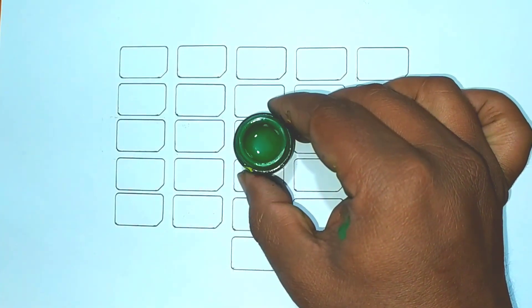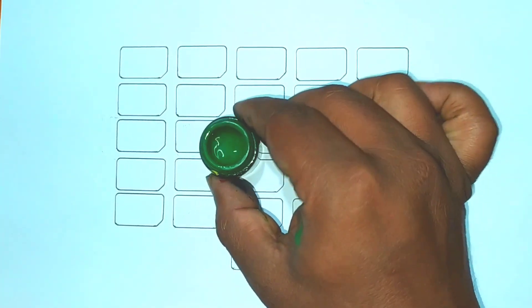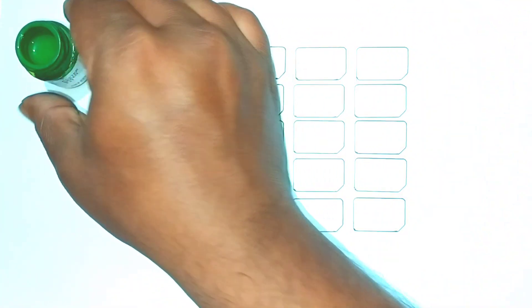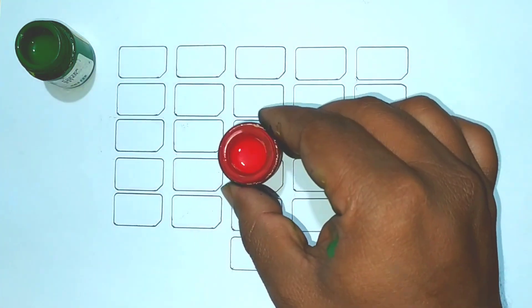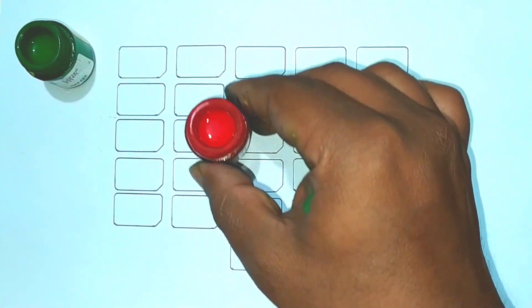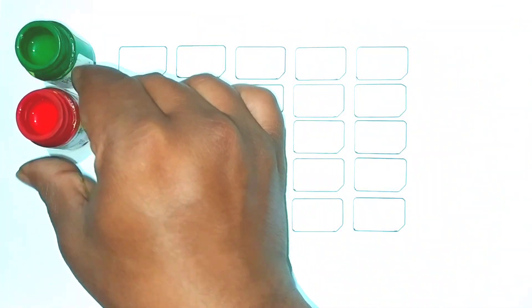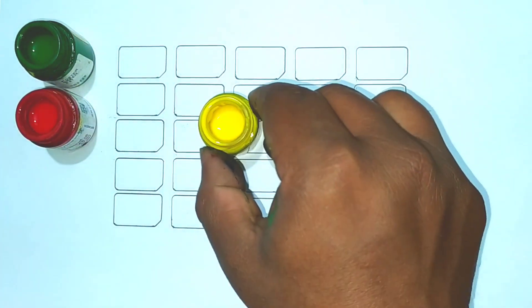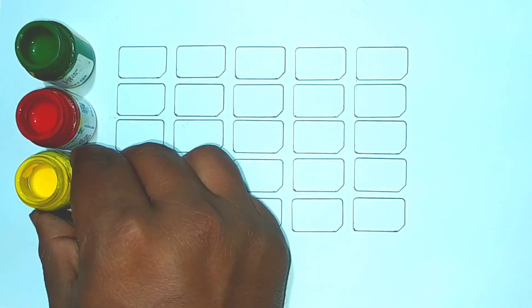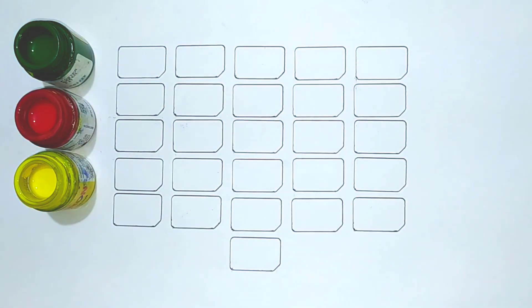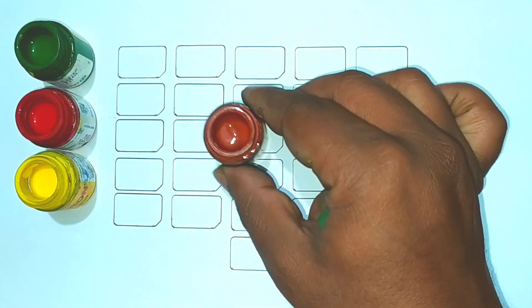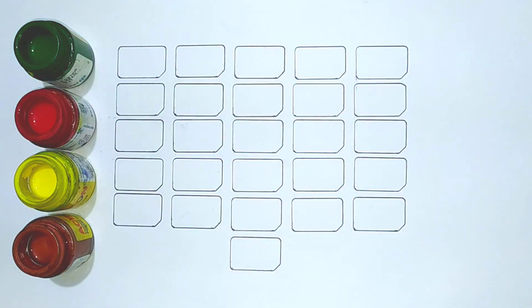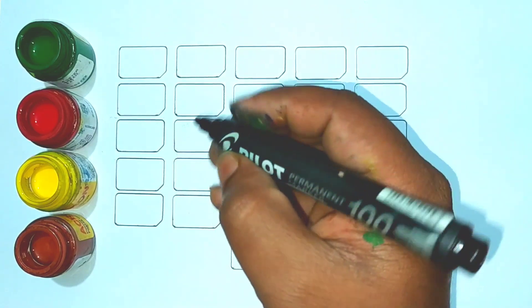Color names: Green color, Red color, Yellow color, Brown color, Black color.